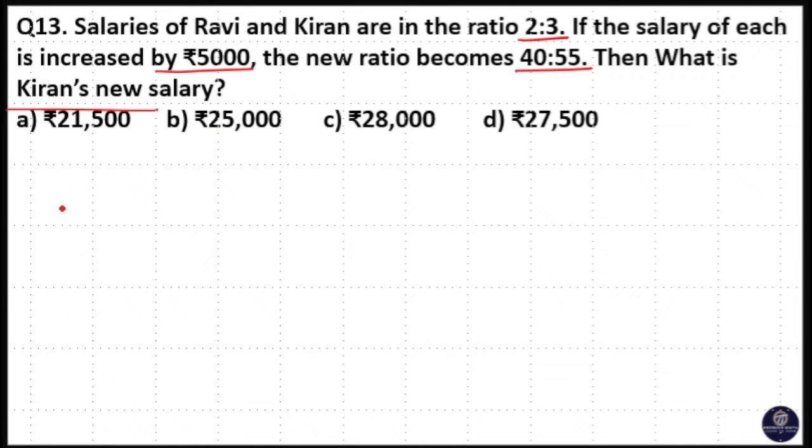So we have Ravi and Kiran here and their salaries in the ratio 2 is to 3. If the salary of each is increased by 5000, new ratio becomes 40 is to 55. That means the difference is equal to 5000.